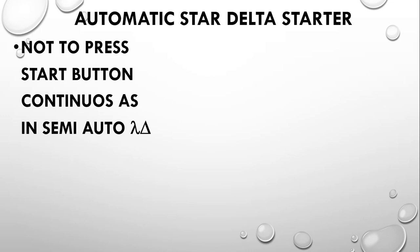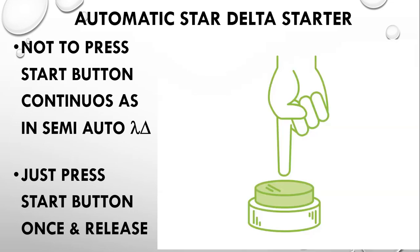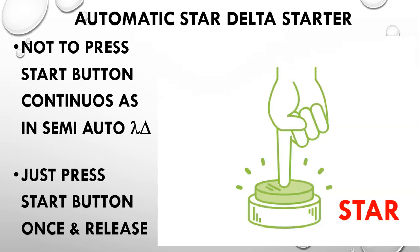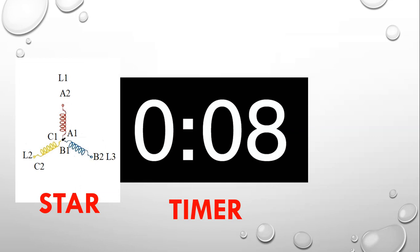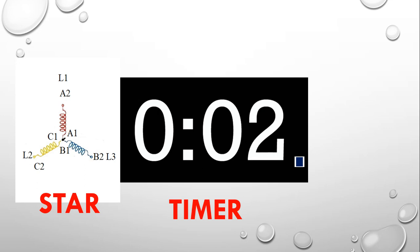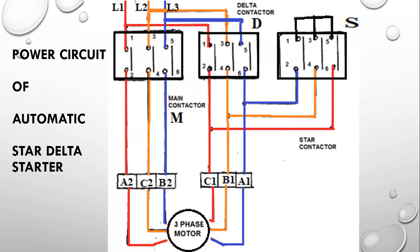The key difference between automatic and semi-automatic: in the automatic starter, you do not need to keep pressing the start button. Just press and release — the motor starts in star, you remove your finger, and it continues in star mode. The timer counts down, and when it reaches zero, it automatically shifts to delta. You simply press the start button once and the rest is automatic.